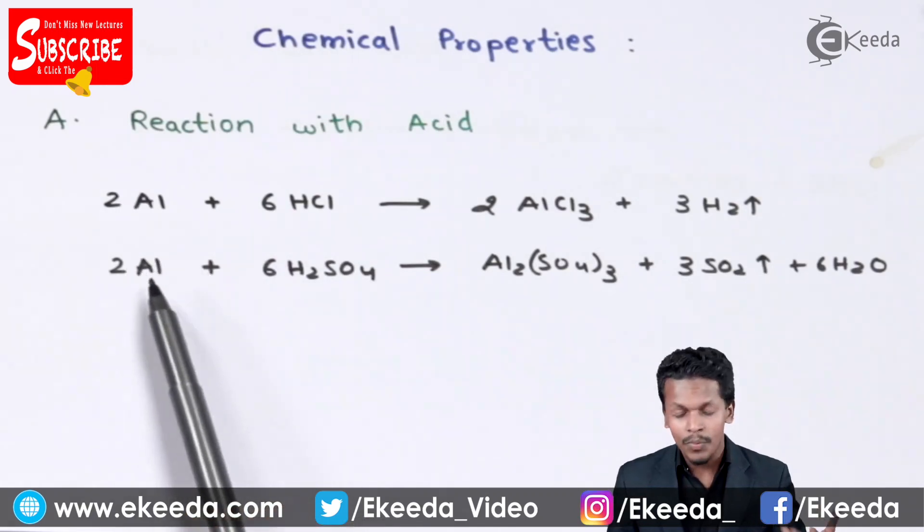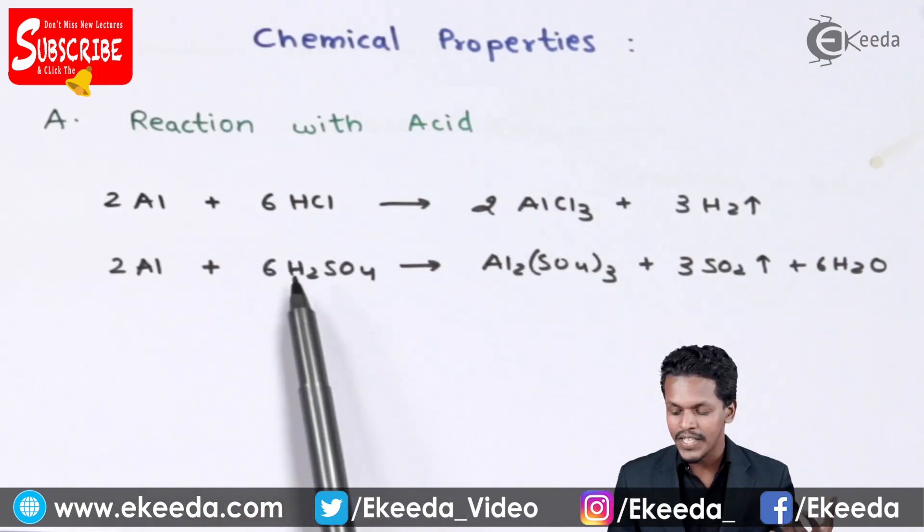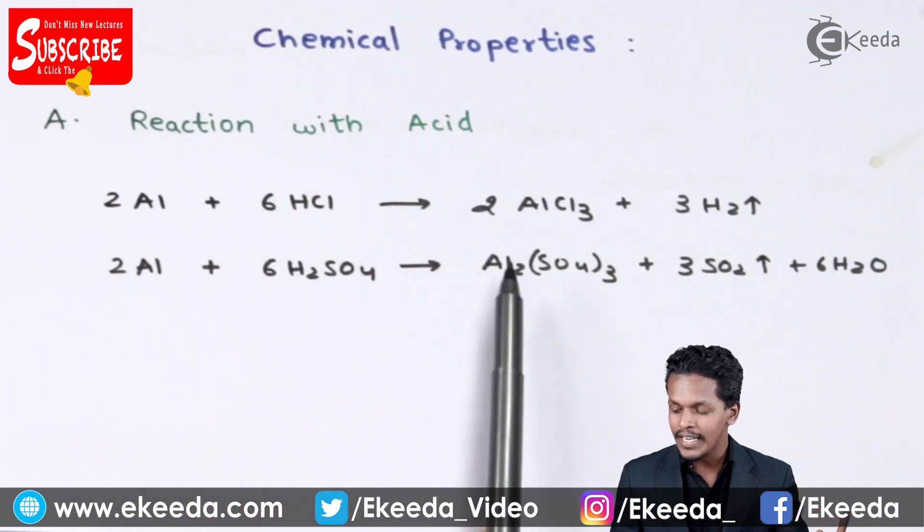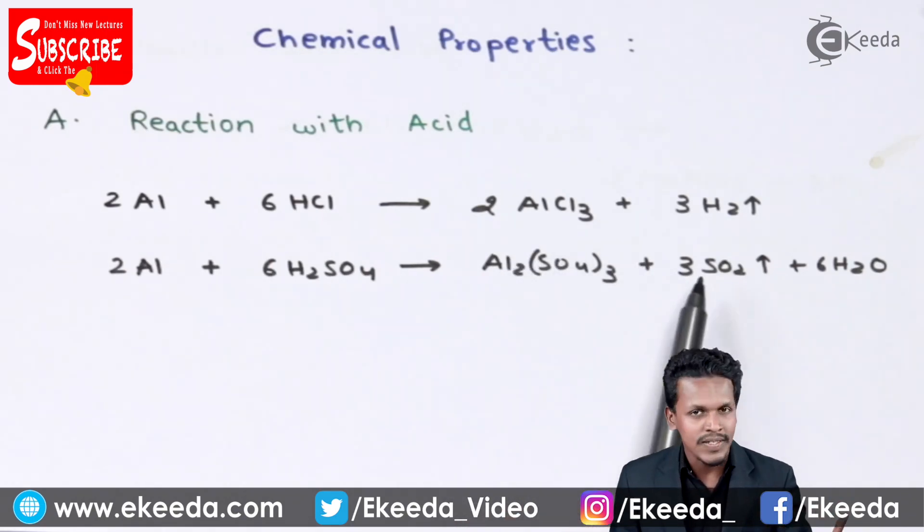In the next reaction, when two moles of aluminium is reacted with six moles of H2SO4, the product that has been obtained is basically aluminium sulfate, Al2(SO4)3, and the other product is H2.